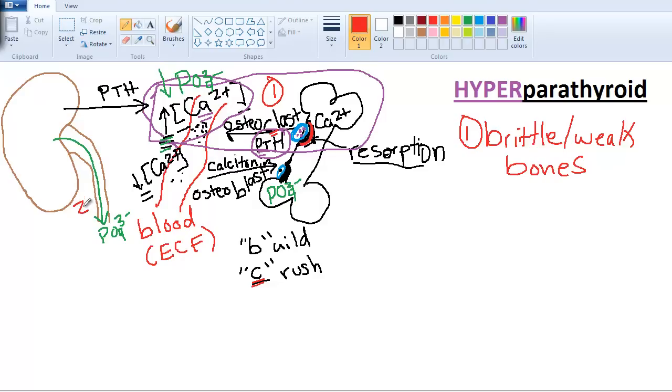What's the second thing that's going to be happening? Do you think this person is going to have hyper or hypophosphatemia? They're excreting it a lot, so they are going to have hypophosphatemia. What's another thing that we can't directly see here? Number three, they're going to end up with muscle fatigue.